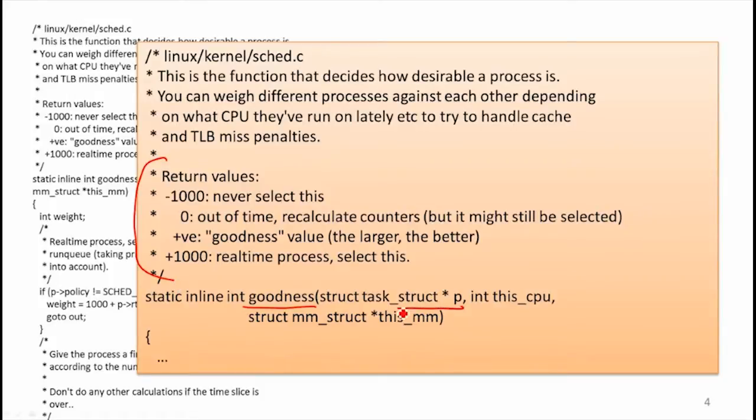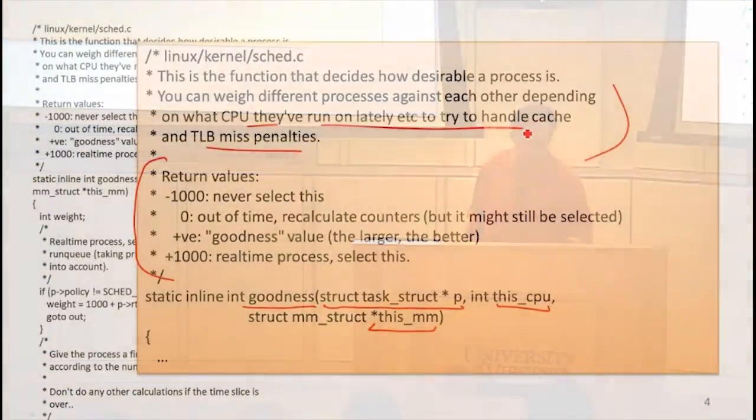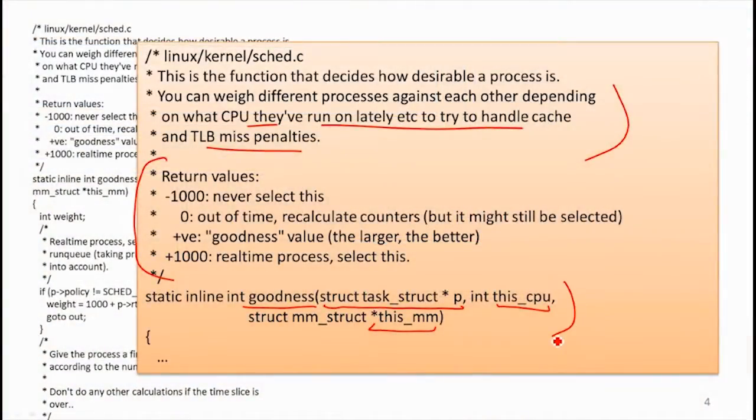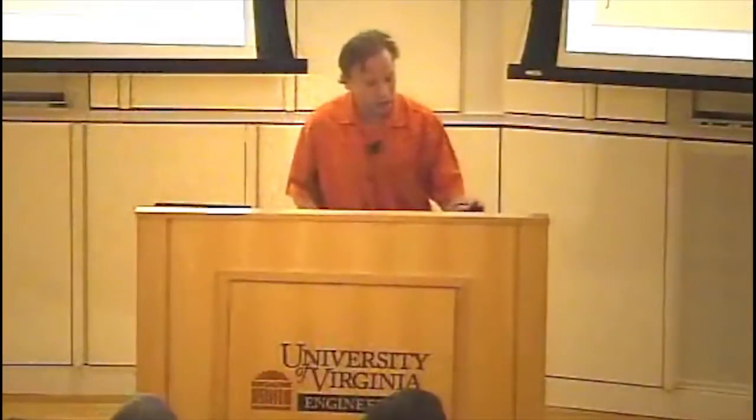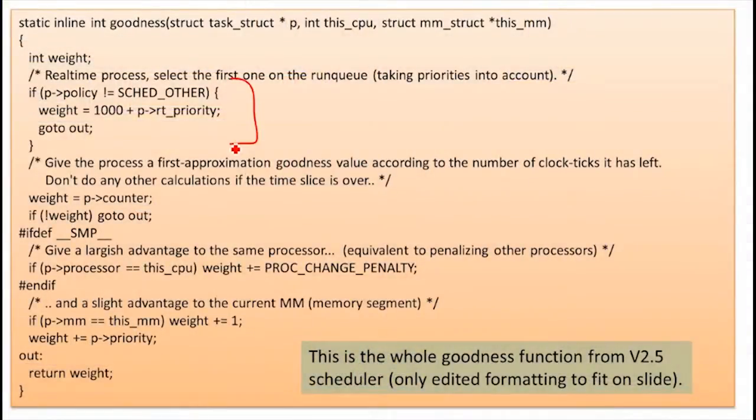It has the task as a parameter. The other two parameters are which CPU we're scheduling in and the current memory segment. And the reason those are parameters is to try to reduce the switching costs. If a process has run recently on that CPU or is in the same memory space, maybe you don't have to flush the whole TLB. Maybe there are entries in the TLB that are still useful. So in order to reduce those penalties, it's somewhat desirable to run the process on the same CPU. It's computing this function, looking at the policy. If it's not a other policy, which means it is a real-time, it's adding 1,000. That's giving those real-time tasks a lot of bonus.